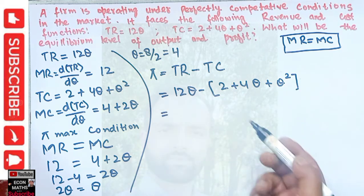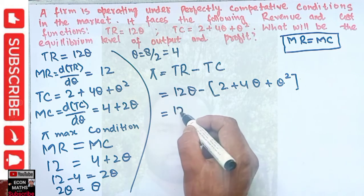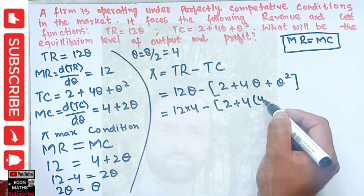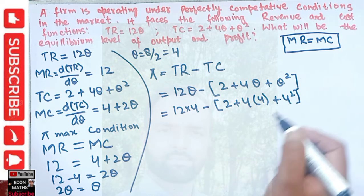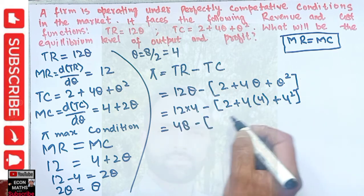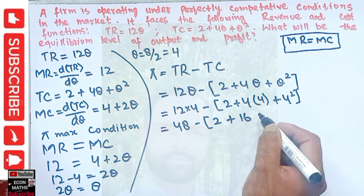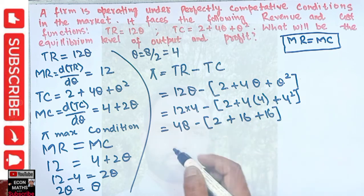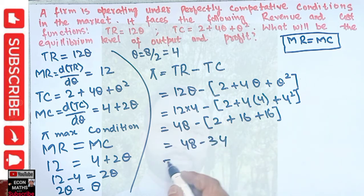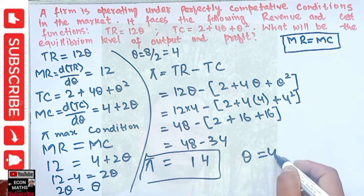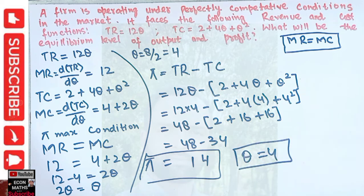Substituting Q equals 4: total revenue is 12 times 4 equals 48. Total cost is 2 plus 4 times 4 plus 4 squared, which is 2 plus 16 plus 16 equals 34. Therefore profit equals 48 minus 34 equals 14. Our equilibrium level of output is 4 and equilibrium level of profit is 14.